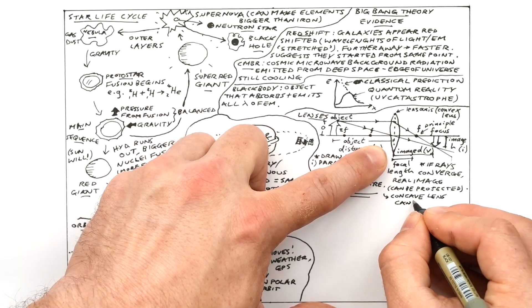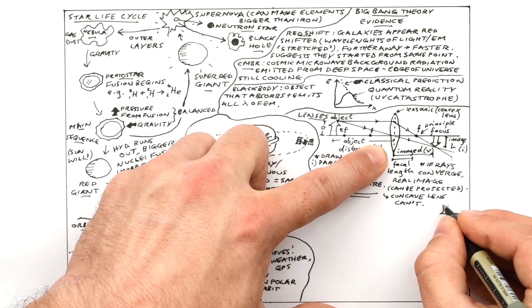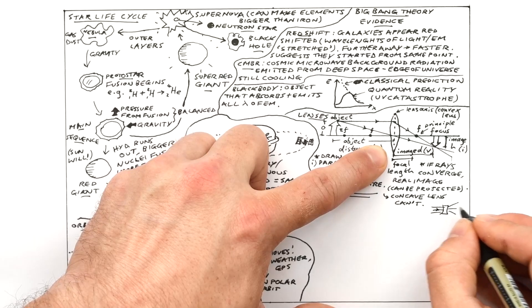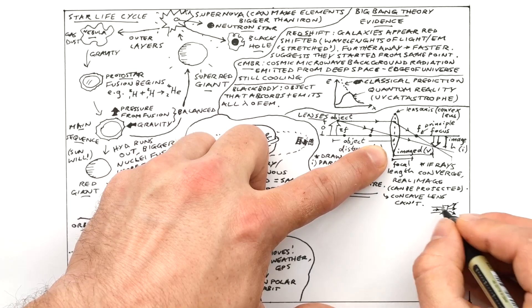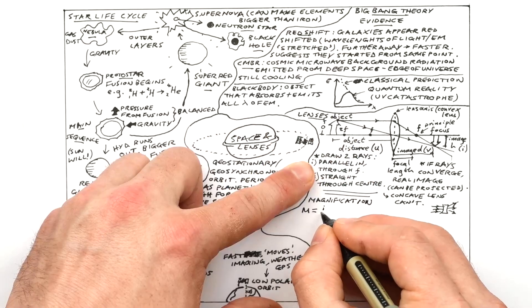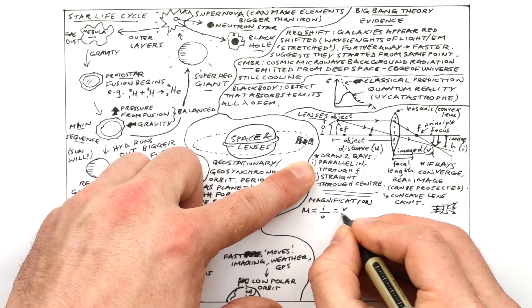However if the rays do not converge then we end up with a virtual image. The rays meet on the wrong side of the lens so they don't actually meet in reality. A convex lens can make both real and virtual images. But a concave lens can't make real images. And we'll talk a little bit more about that in a second. Magnification of the lens is equal to the image height divided by the object height or the image distance divided by the object distance.